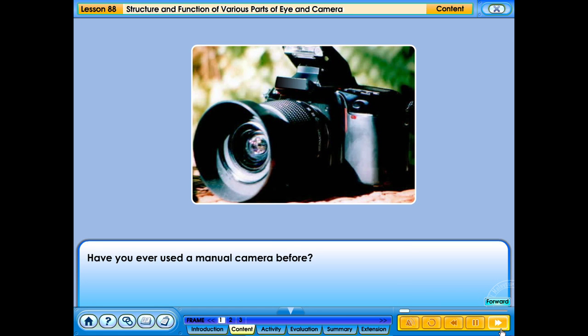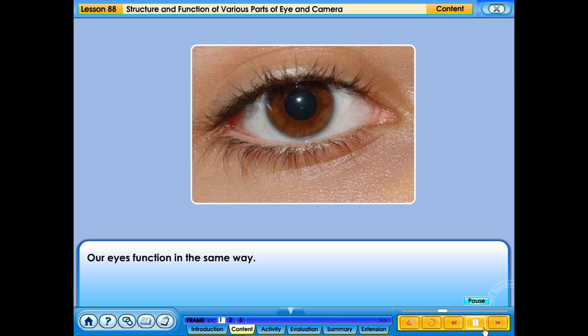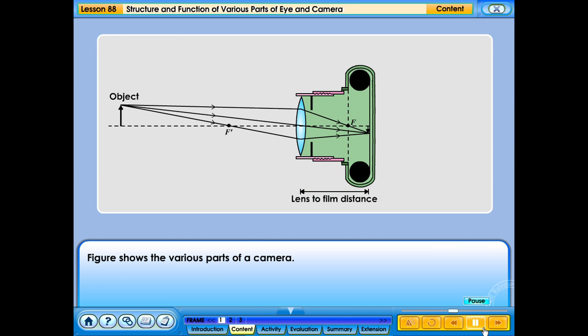Have you ever used a manual camera before? A camera captures images by focusing on an object and allowing specific amounts of light to pass through the lens to create an image on film. Our eyes function in the same way. The figure shows the various parts of a camera. Click at the various parts of the camera to know its name.